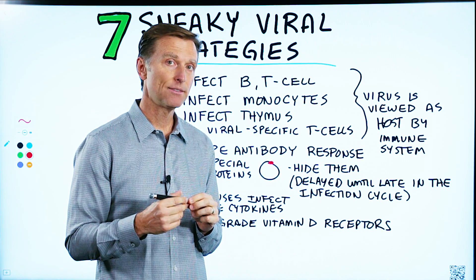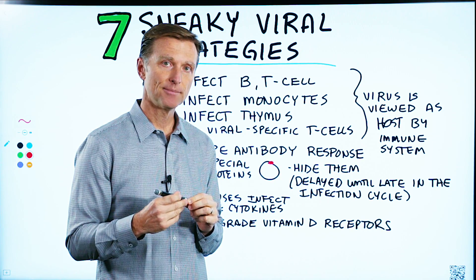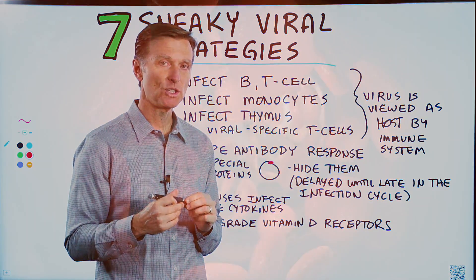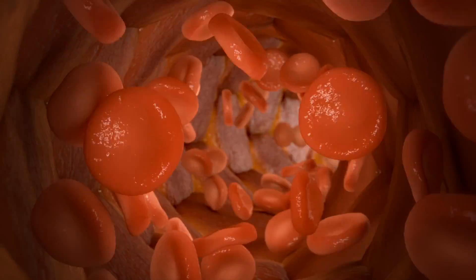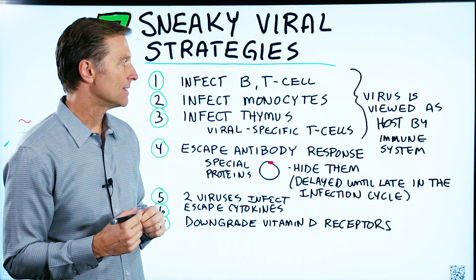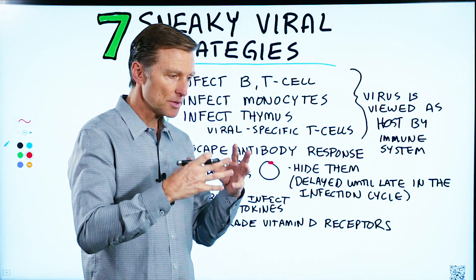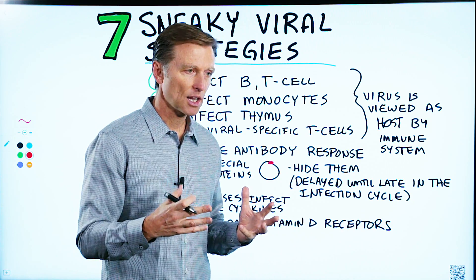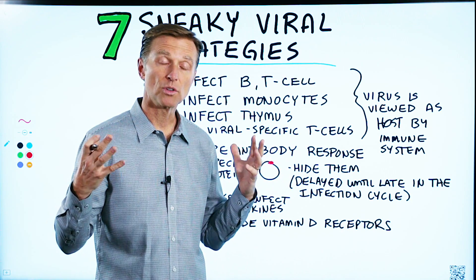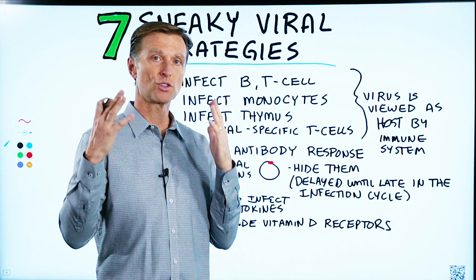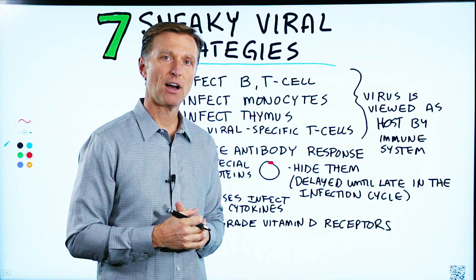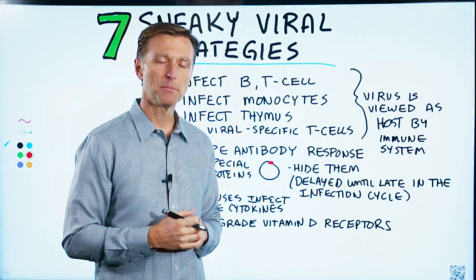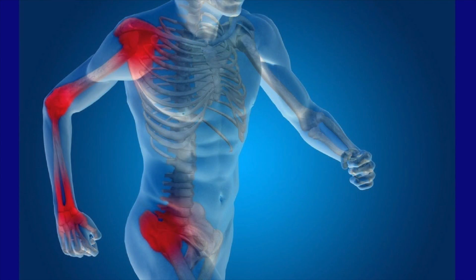Certain cells that don't have DNA, like your red blood cells, can't really be used by viruses. So viruses start reproducing and create a lot of damage within your immune system, because your immune system senses an invader, creates inflammation, and starts to create collateral damage.